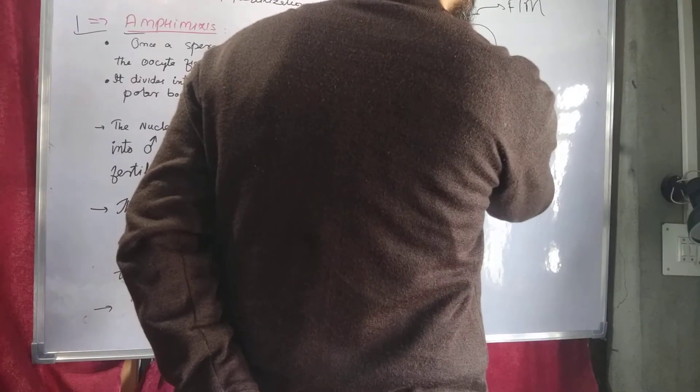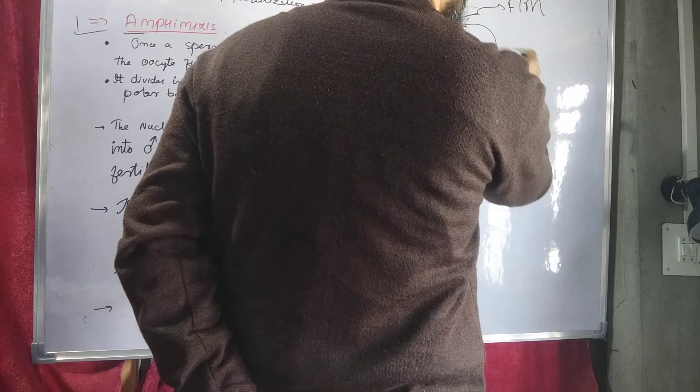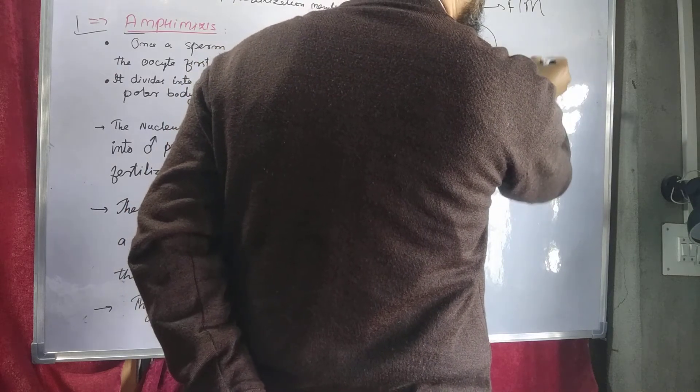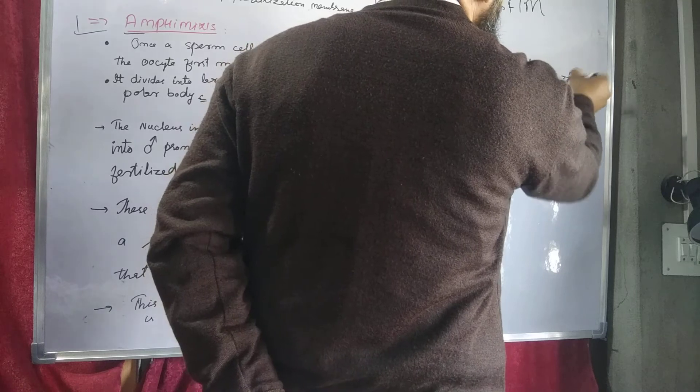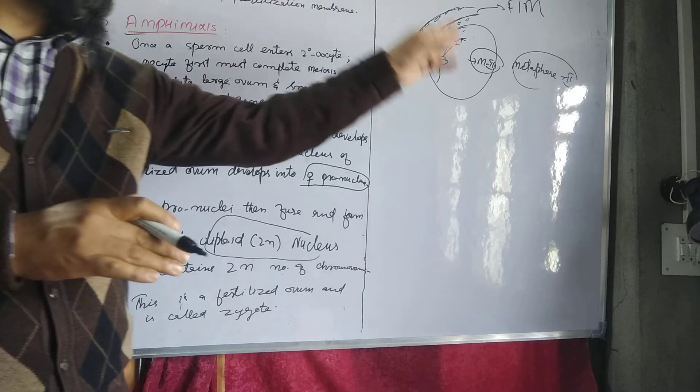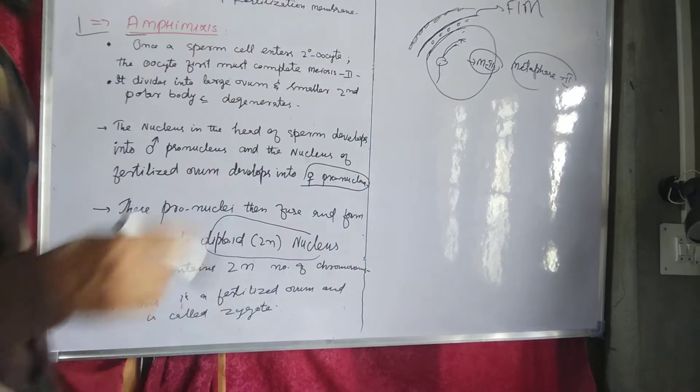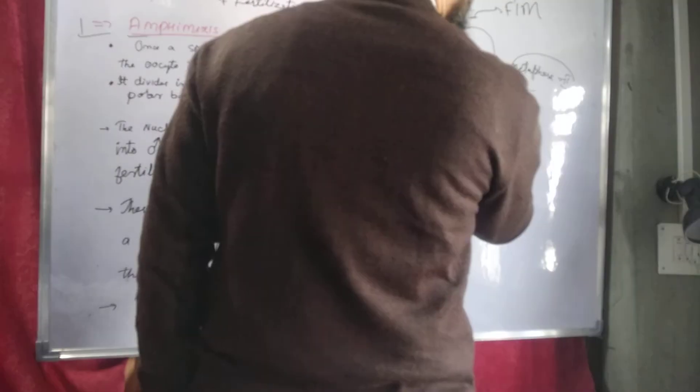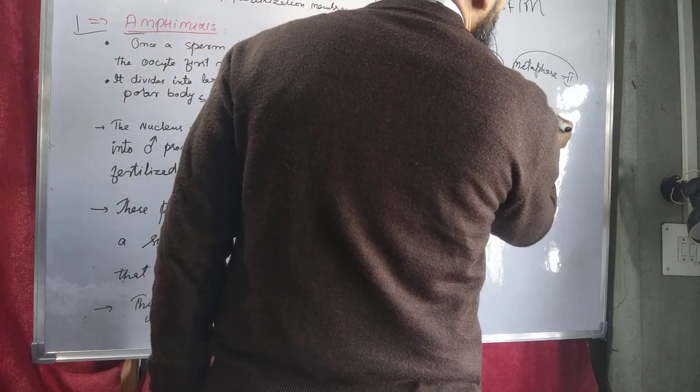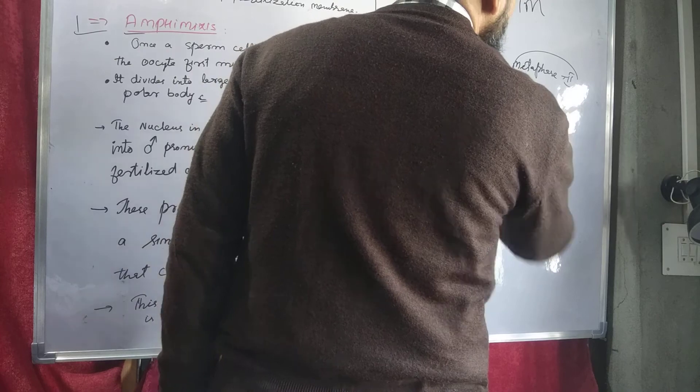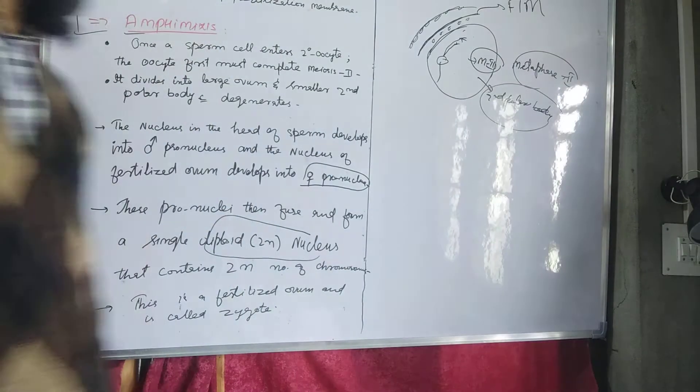The secondary oocyte will first complete its meiosis second. When meiosis second is completed, the second polar body will be released and is instantly degenerated.